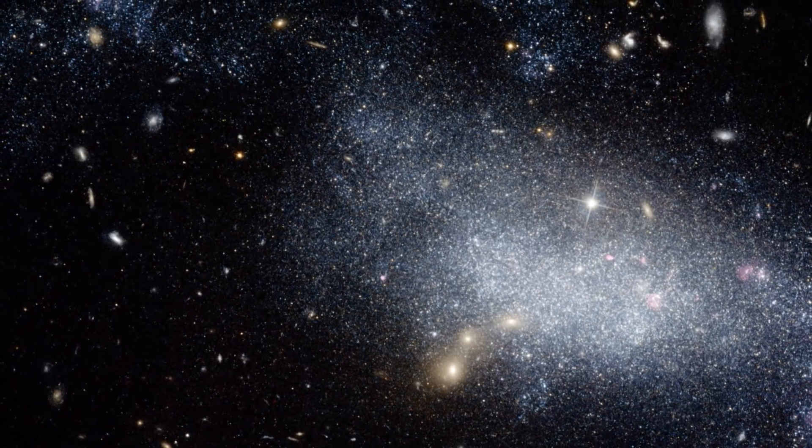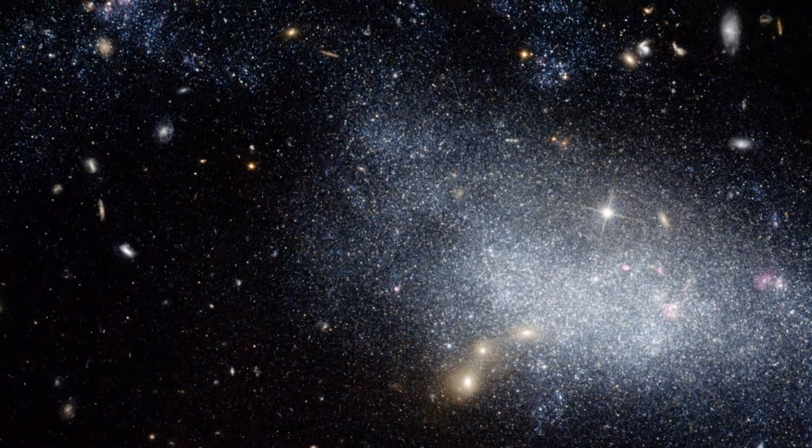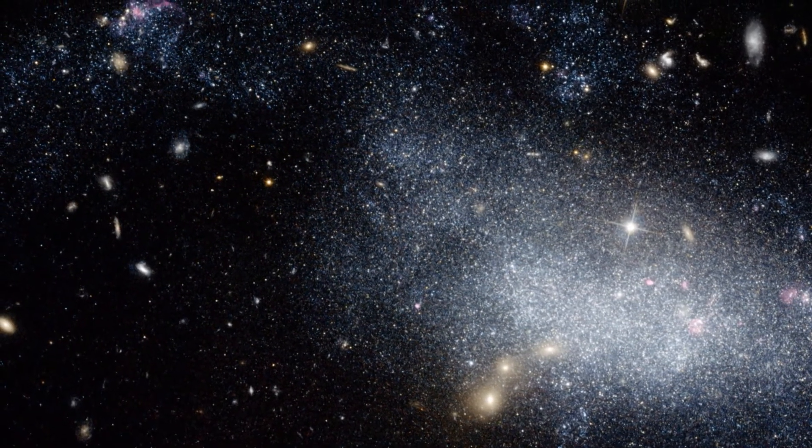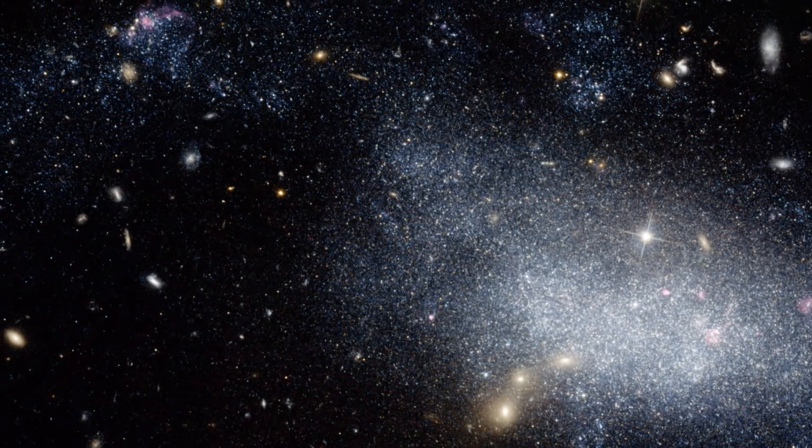Most of these galaxies were relatively small and faint, with masses similar to those of the satellite galaxies surrounding the Milky Way.